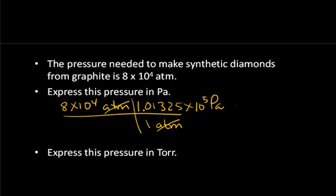The atmosphere unit, of course, cancels. You do the arithmetic and you end up with 8.106 times 10 to the ninth pascals. So you can see that this pascal unit is actually a very small unit of measure for pressure. And the atmosphere is a convenient unit of measure to use when we're referring to gases that are around normal atmospheric pressure.